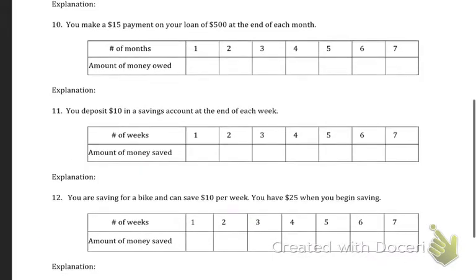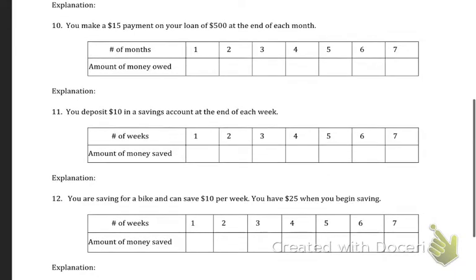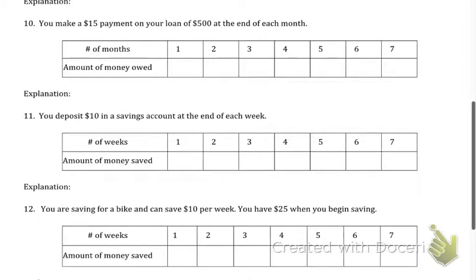Moving down. We're trying to complete the table here. So these ones can be a little bit challenging and it's a lot like the work that we did today. We're starting with something and we're building a pattern. So you make $15 payment on your loan of $500 at the end of each month. So the amount of money that you owe at the end of each month is going to be demonstrated here. And we just have to make sure that we're careful about how we're writing stuff.